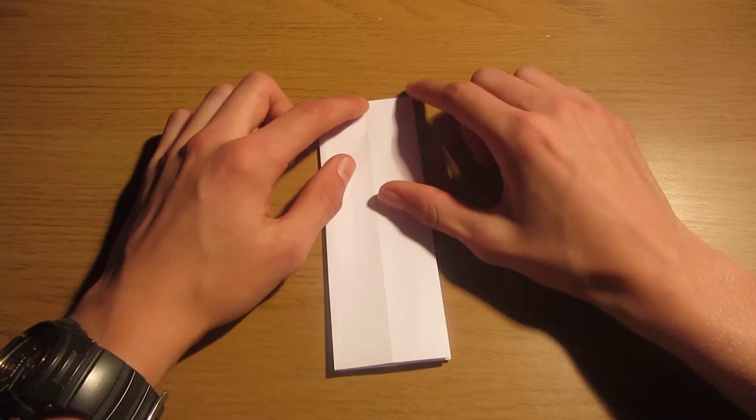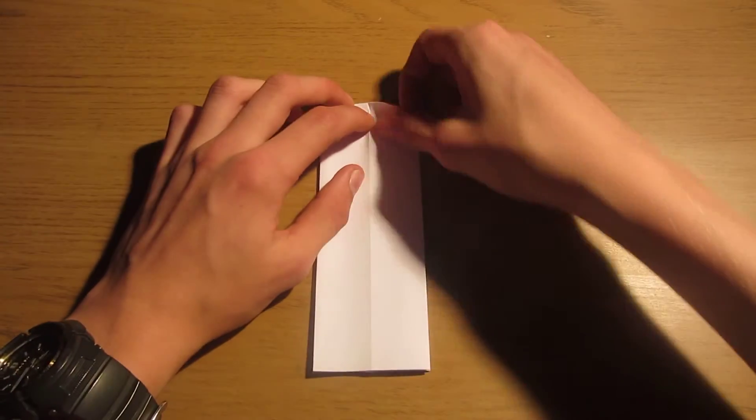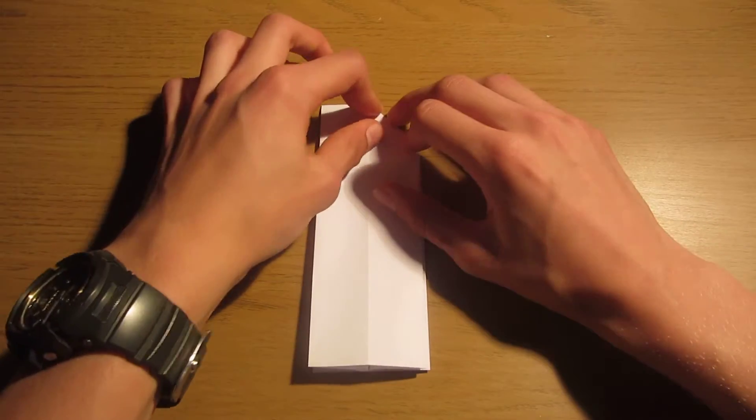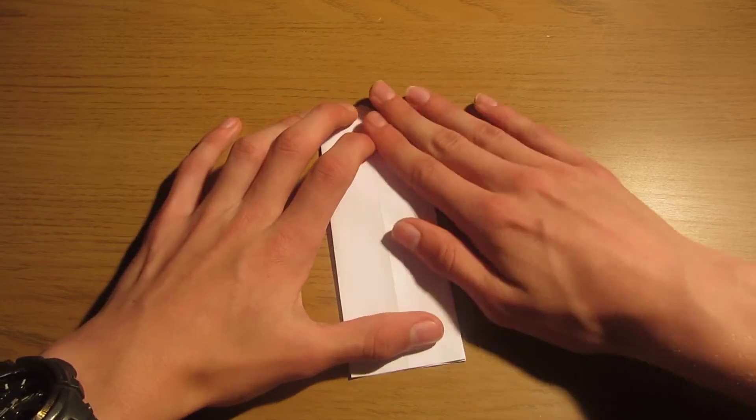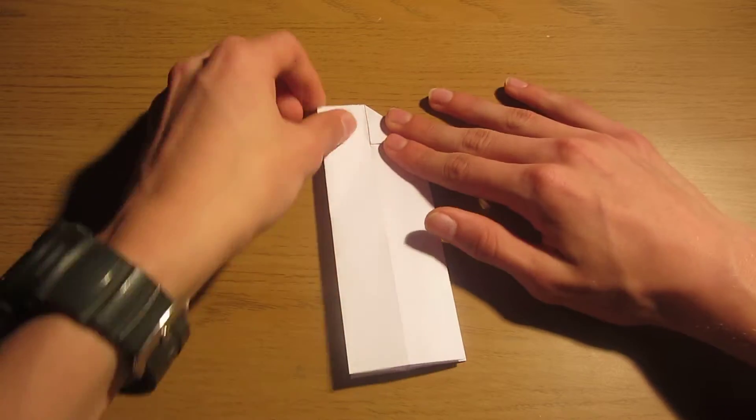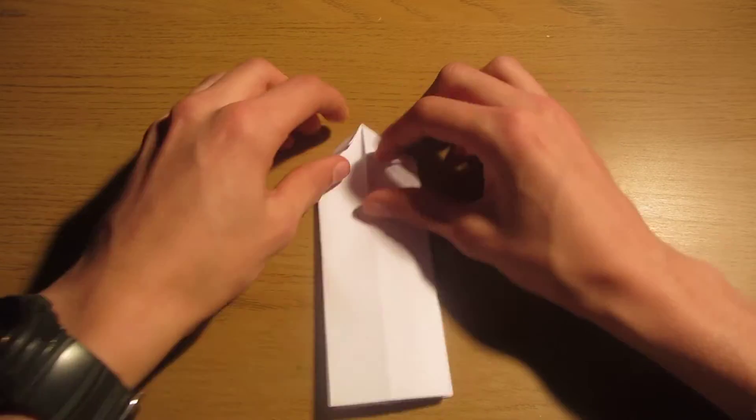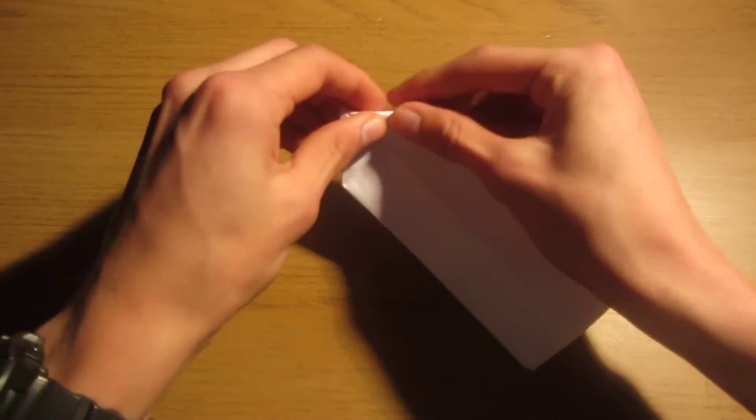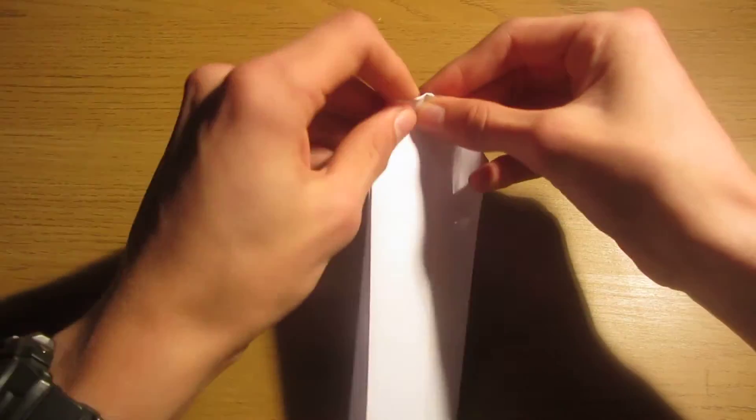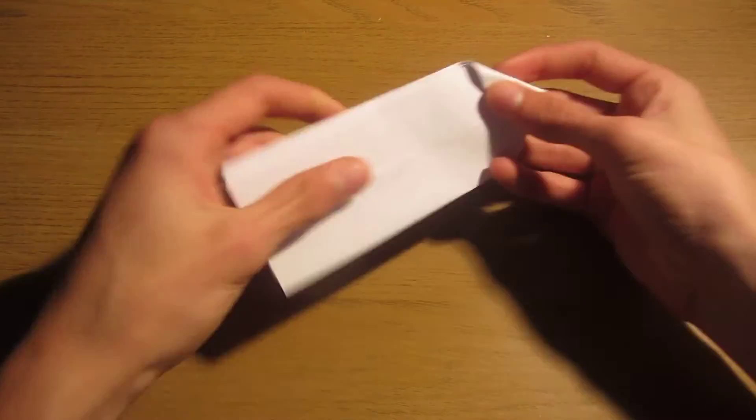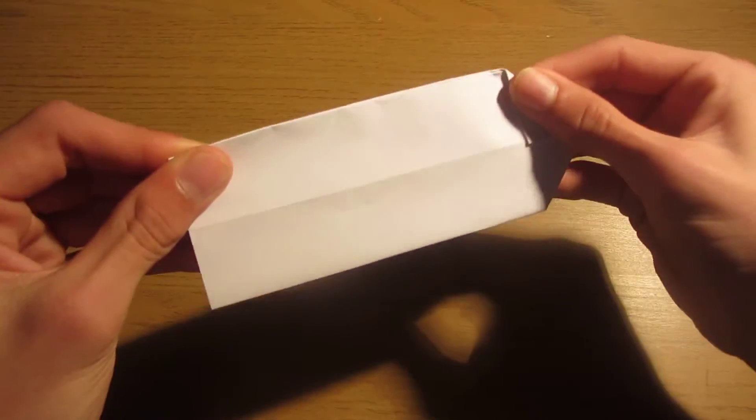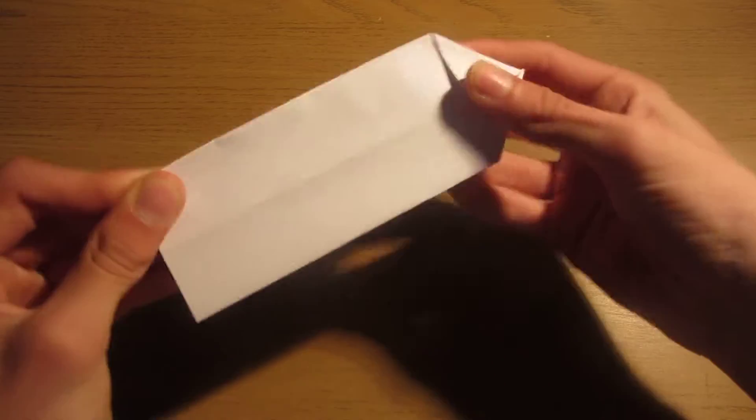And now we're just going to fold this corner to the middle line. And this one too. And then fold them back too. So this way. Make sure it's nice and in line there. And this side too.